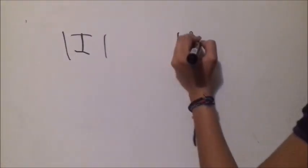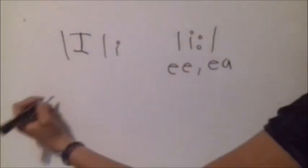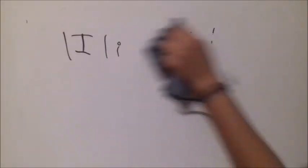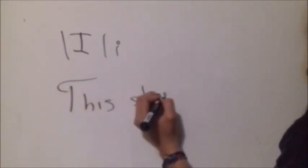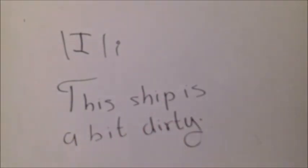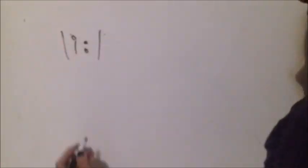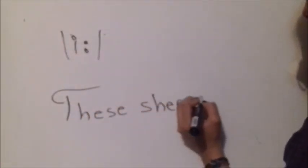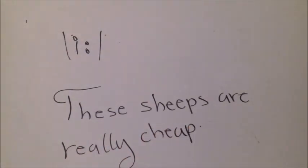The short sound I is always used with the letter I, and the long sound E is always used with a combination of two letters: EE, or a letter E and A. The short sound I is pronounced in: 'This ship is a bit dirty.' The long sound E is pronounced in: 'These ships are really cheap.'